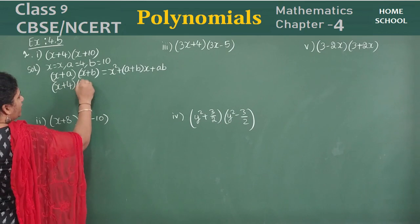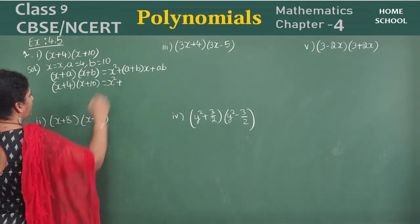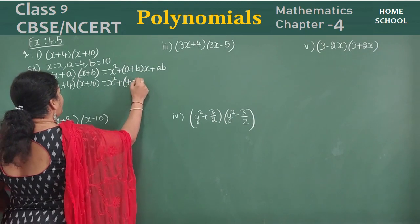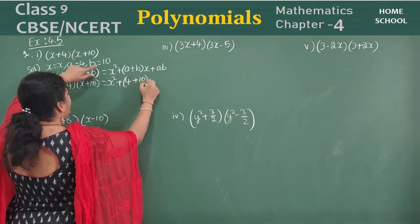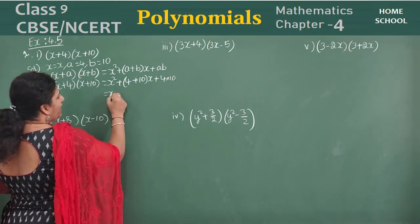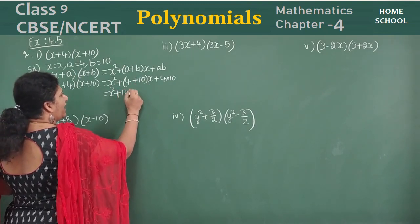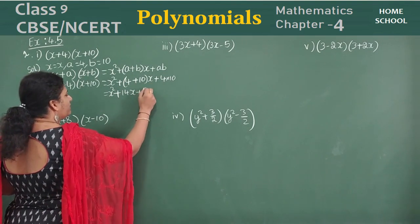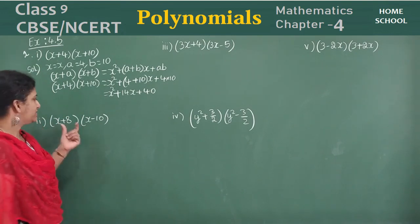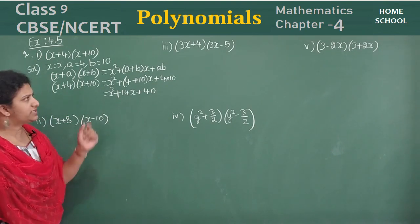Now let's solve: x plus 4 into x plus 10 is equal to x squared, plus a value 4 and b value 10, so 4 plus 10 will be 14, giving 14x, and 4 times 10 is 40. So the answer is x squared plus 14x plus 40. Okay, second one: x plus 8 into x minus 10.